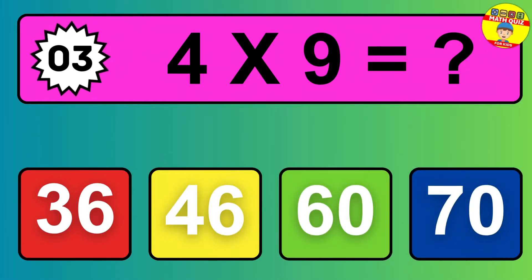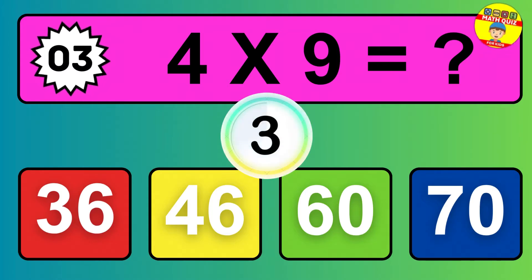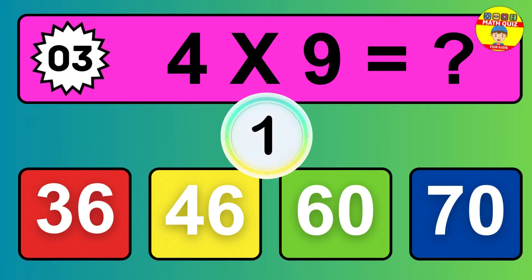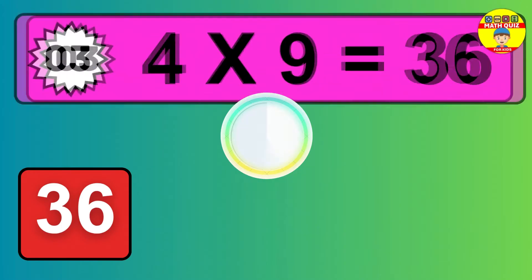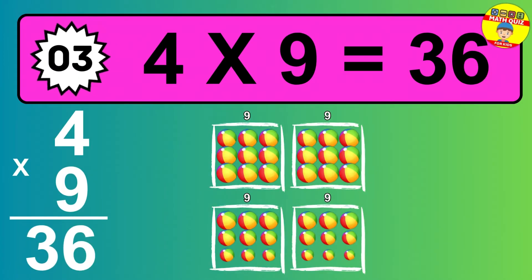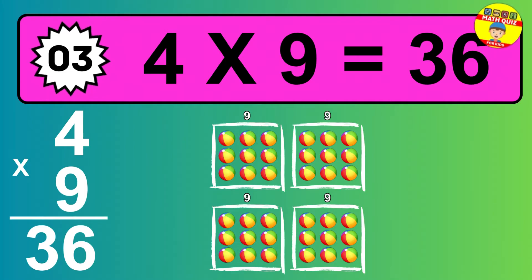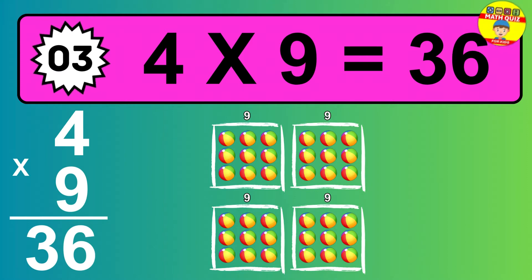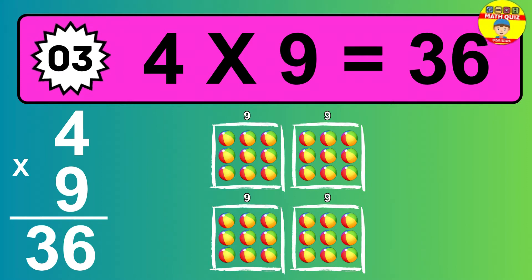Question 3. 4 times 9 equals what? The answer is 4 times 9 is 36. To calculate, we have 4 groups with 9 balls each one. So how many balls do we have? 36 balls.